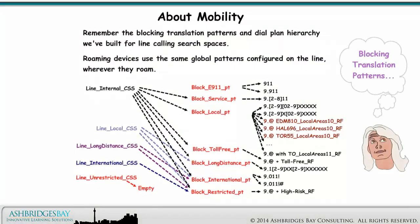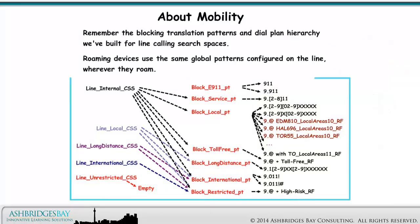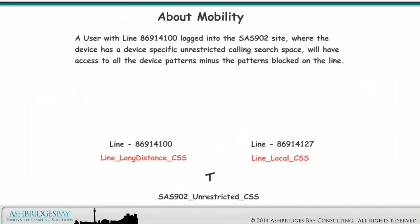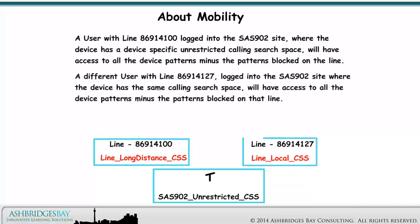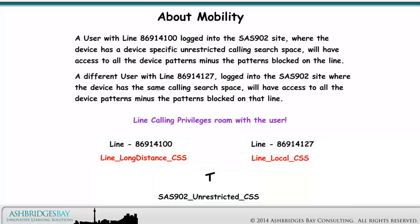Remember the blocking translation patterns and dial plan hierarchy we've built for line calling search spaces. Roaming devices use the same global patterns configured on the line, wherever they roam. A user with line 8691-4100 logged into the Saskatchewan 902 site will have access to all the device patterns minus the patterns blocked on the line. A different user with line 8691-4127 logged into the same site and device calling search space will have access to all device patterns minus the patterns blocked on that line. Line calling privileges roam with the user.